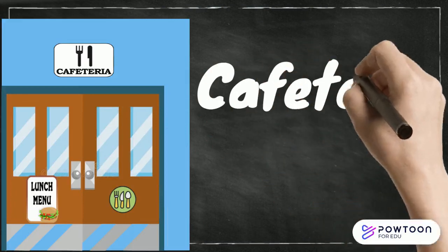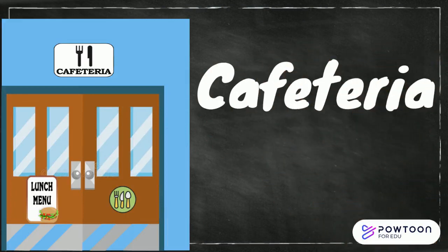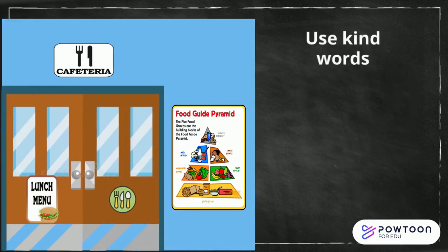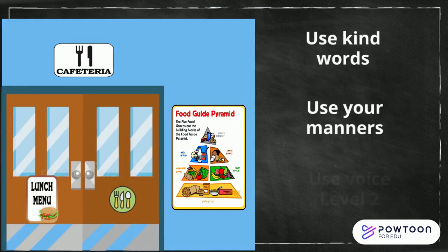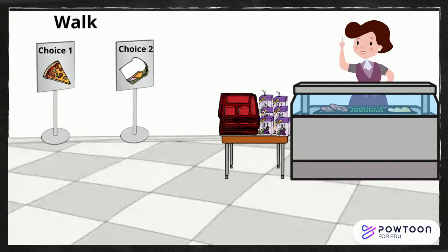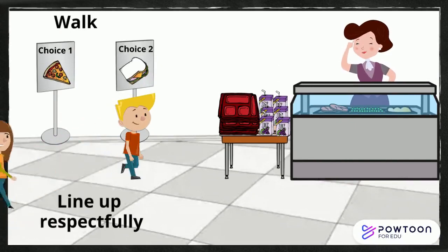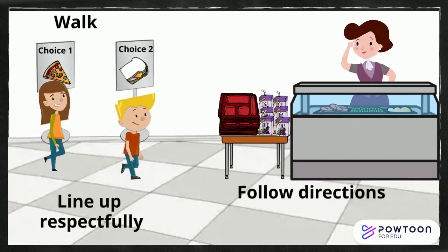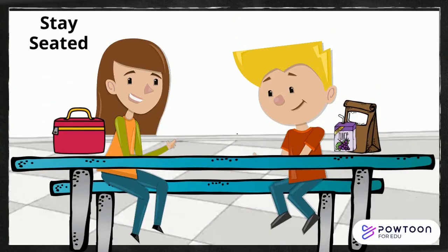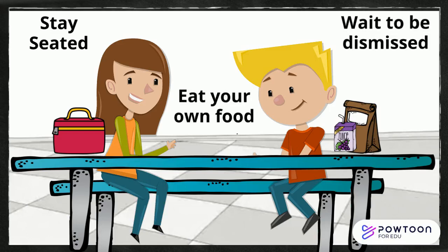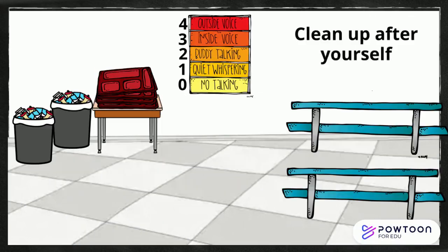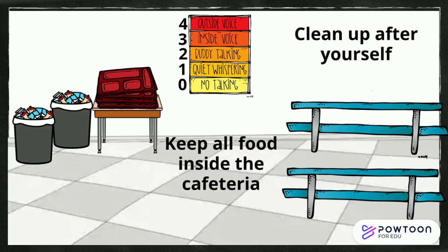The cafeteria. Use kind words, use your manners, and use voice level 2. Remember to walk, line up respectfully, and please follow directions. Stay seated. Eat your own food. Wait to be dismissed. Clean up after yourself. Keep all food inside the cafeteria, empty milk cartons, and stack trays.